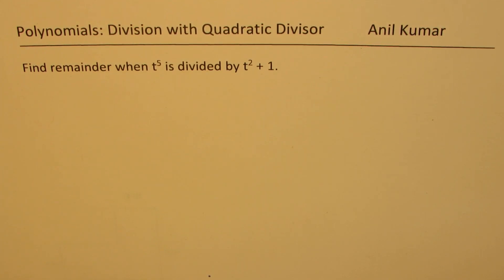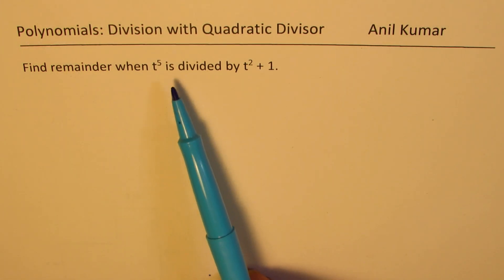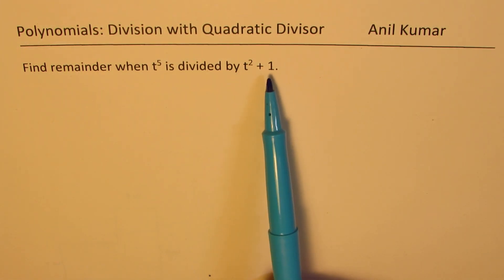I am Anil Kumar sharing with you a question from my subscriber and I hope it helps many others. We will look into polynomial division with the help of this example. You need to find remainder when t to the power of 5 is divided by t squared plus 1.